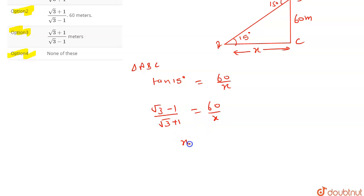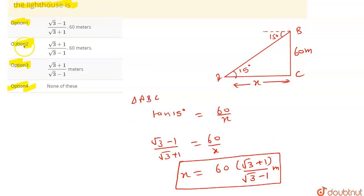So x will be equal to 60 into root 3 plus 1 upon root 3 minus 1. So the distance of boat from the base of lighthouse is this meter. Okay, so let's see the option. So option 2 matches with our answer, so option 2 is our answer.